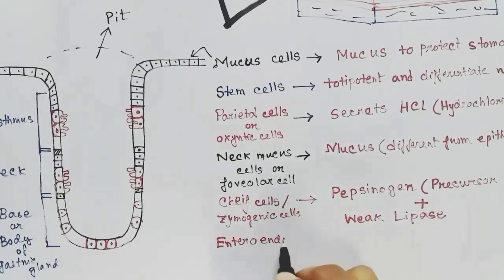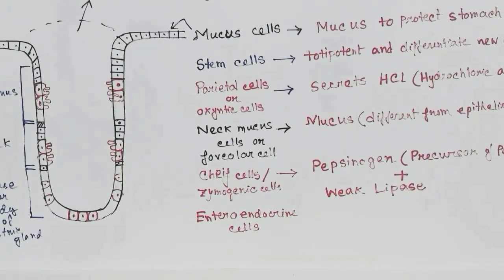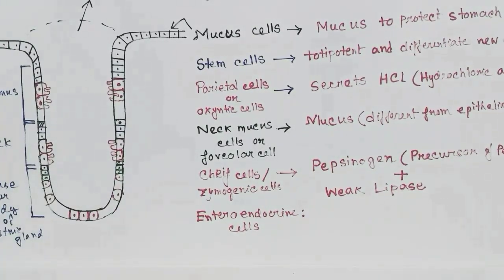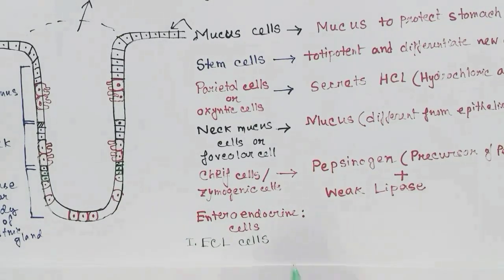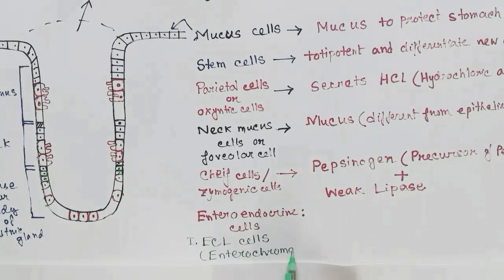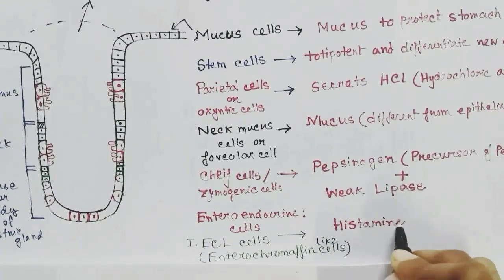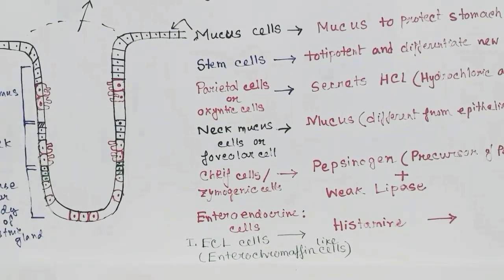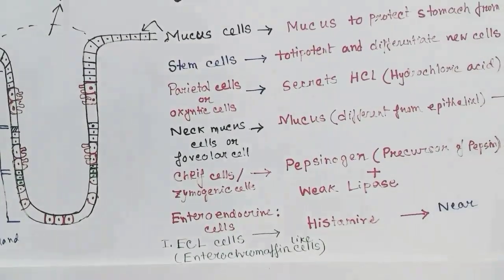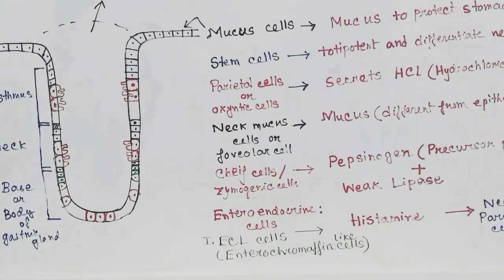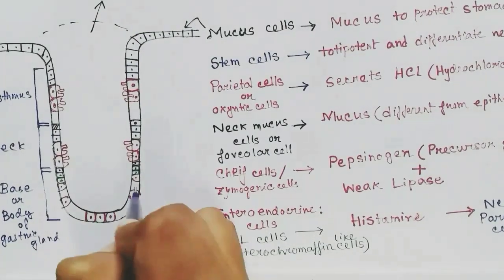Next are the enteroendocrine cells. Under enteroendocrine cells, we will see three kinds of cells. The first are ECL cells, which stands for enterochromaffin-like cells. These cells release histamine, which stimulates the parietal cells to release HCl. These cells are present near the parietal cells.